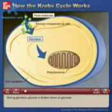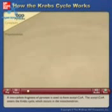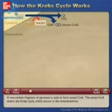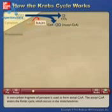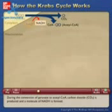During glycolysis, glucose is broken down to pyruvate. A two-carbon fragment of pyruvate is used to form acetyl CoA. The acetyl CoA enters the Krebs cycle, which occurs in the mitochondrion. During the conversion of pyruvate to acetyl CoA, carbon dioxide (CO2) is produced and a molecule of NADH is formed.